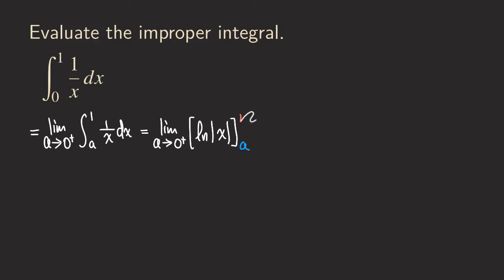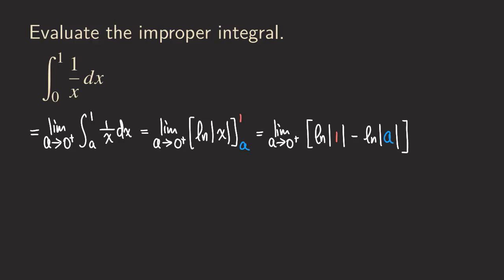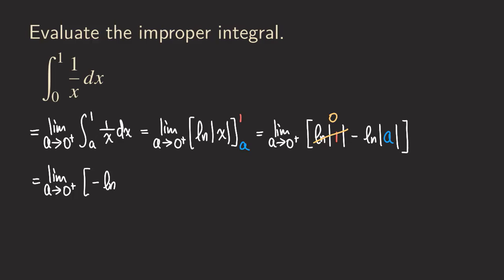Next, we plug in 1 and then plug in a, and subtract them. We see that ln of 1 is equal to zero, so we don't need to worry about that. And because a is approaching zero from the right, a is positive and greater than zero, so we don't need the absolute value. We can simplify the limit to just have ln of a.